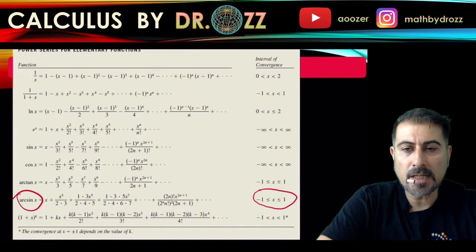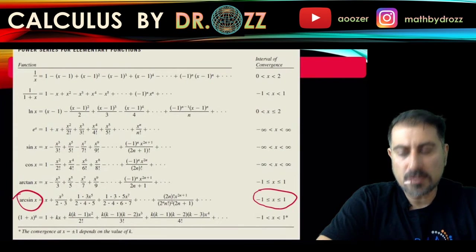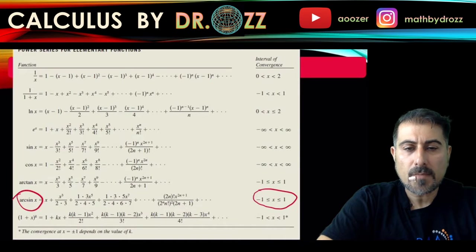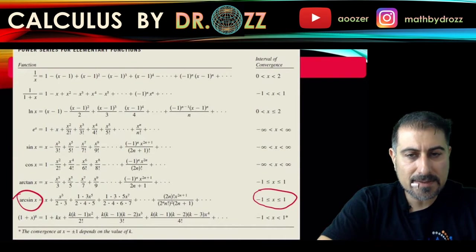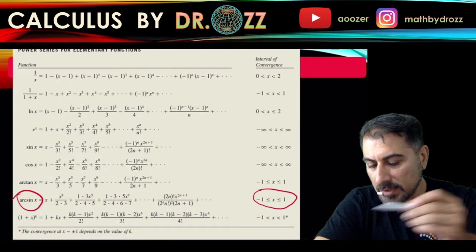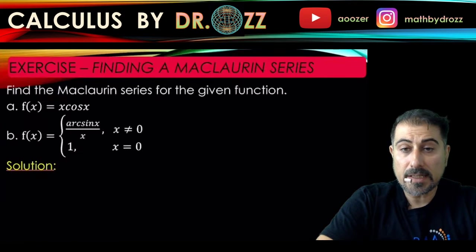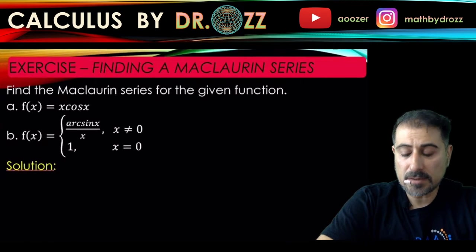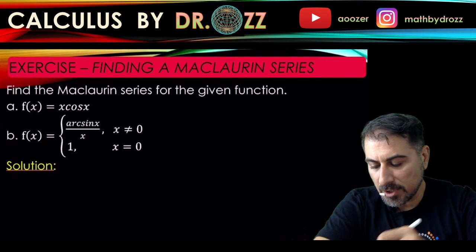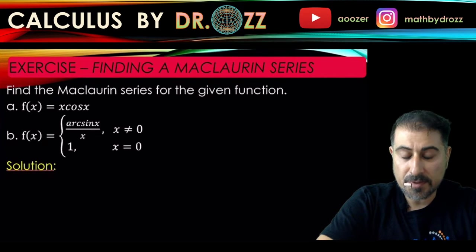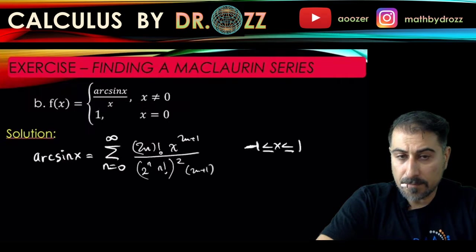All I'm going to do next is just copy this down back to our problem and divide this by x, because that's exactly what one of the pieces looks like here. Arc sine x over x. I just copied the power series representation down here.